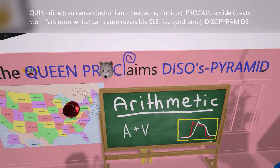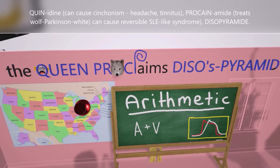Looking at 'proclaims,' which represents procainamide, you might notice a white wolf. This reminds us that procainamide is effective in treating Wolff-Parkinson-White syndrome — and it's specifically a white wolf to help us remember Wolff-Parkinson-White.